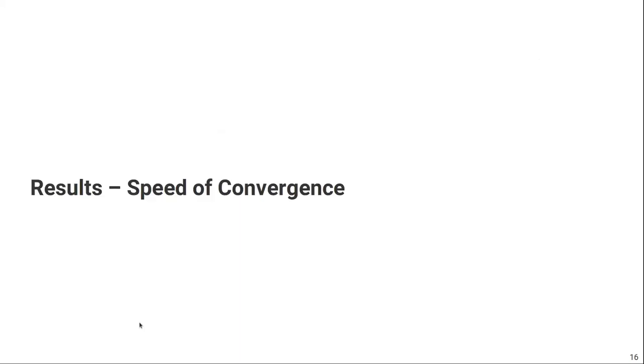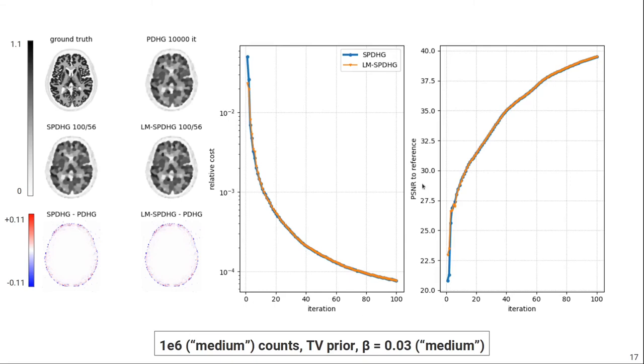Let's have a look at the results of our convergence tests. You can see here on the right the PSNR and the relative cost as a function of the iteration number for the sinogram SPDHG in blue and the list-mode SPDHG in orange. Those are the results for our first test, where we used the medium count level of 1 million counts, a total variation prior with a medium strength. So you can see based on the metrics that the convergence of the two algorithms is exactly the same, or very, very similar at least. You can also appreciate that by looking at the reconstructions after 100 iterations and 56 subsets. So they are very similar between the sinogram and the list-mode version. And both of them are also very, very close to the reference solution, which can be seen by the difference plots shown here at the bottom.